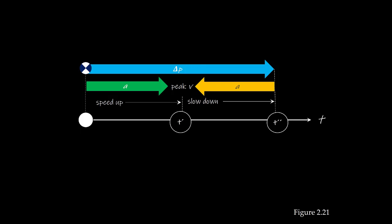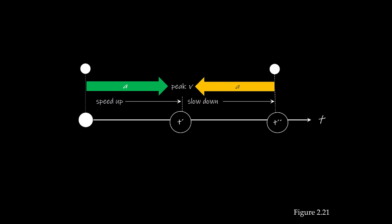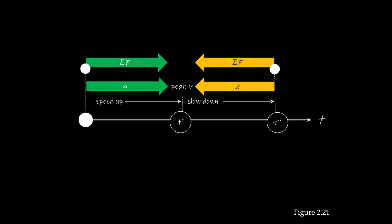Things that are speeding up require an acceleration that is going to be in the direction of travel. When things are slowing down, we have to have an acceleration that is opposite to the direction of travel. So first we're going to speed up — that's going to be the result of an acceleration in the direction of travel. We'll hit some peak velocity and then we'll slow down. That slowing down is going to be the result of an acceleration that's opposite to the direction of travel. Recall that all accelerations come from effective forces, and that effective forces are always going to be in the direction of the acceleration. So initially when we're speeding up, that's going to be the result of an effective force also in the direction of travel. During the latter portion of the movement when we are slowing down, we have an effective force that is also opposite to the direction of travel.